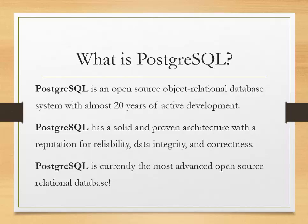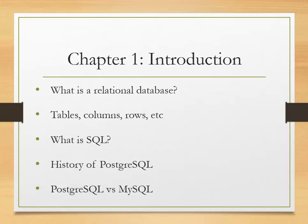First of all, what is PostgreSQL? Postgres is an open source object-relational database with almost 20 years of active development. It has a solid and proven architecture with a reputation for reliability, data integrity, and correctness. PostgreSQL is currently the most advanced open source relational database.